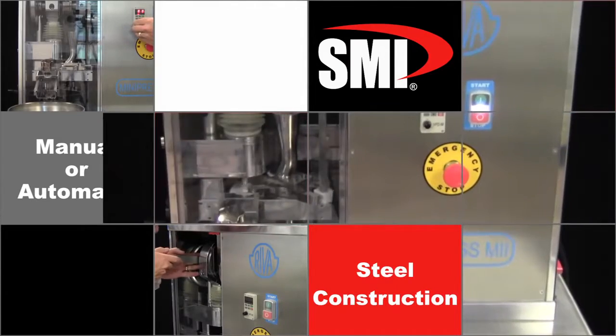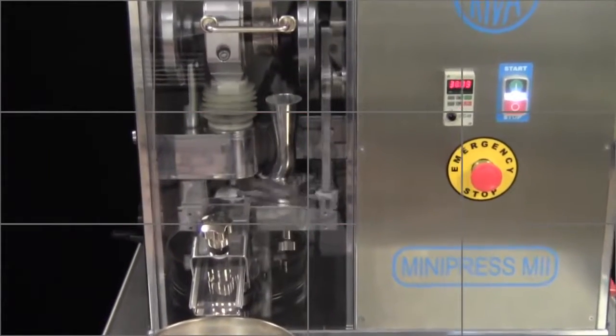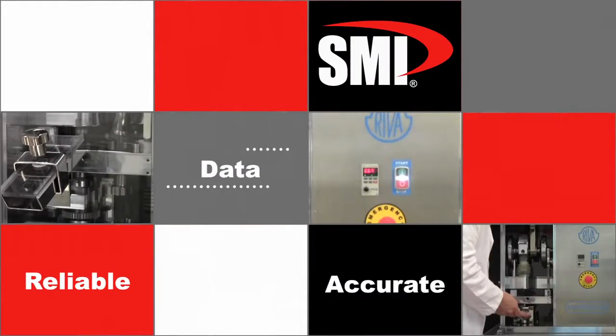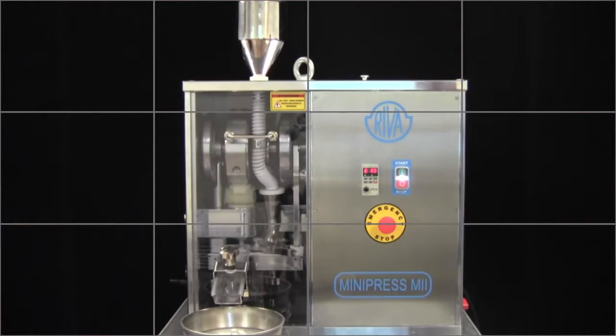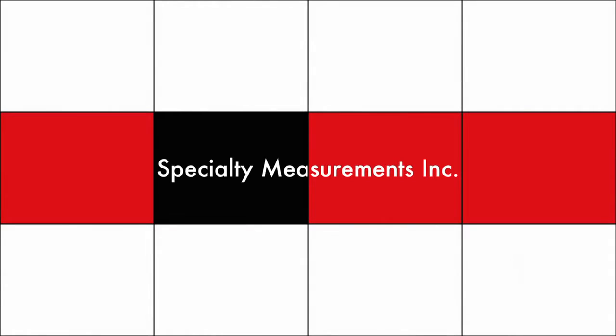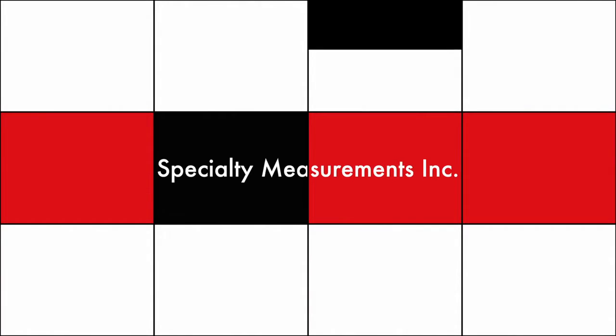With as little as 1 gram of material, a tremendous amount of information about the compressibility and strength of the resulting compact can be understood. If you appreciate Heckel plots, force displacement curves, and porosity graphs, this is the perfect machine.